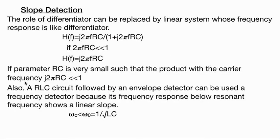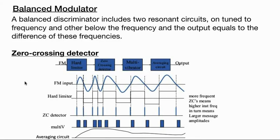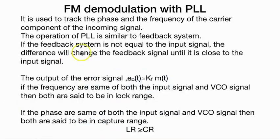Slope detection, balanced discriminator. It is always in the zero crossing that we find the information.